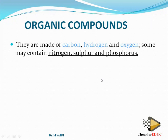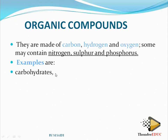Examples of organic compounds include, number one, carbohydrates. We're going to look at this in detail. Carbohydrates include starch in plants and glycogen in animals, as well as cellulose. Number two, we have lipids — these are the fats in animals and the oils in plants.